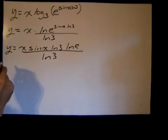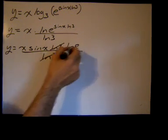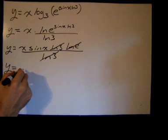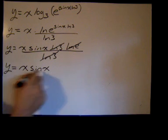So we end up getting, these are all products, so notice I can cross that natural log of 3 over the natural log of 3. And that is just 1. So this whole expression is equivalent to y equals x times the sine of x.